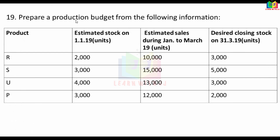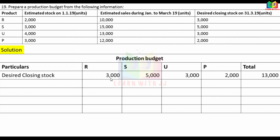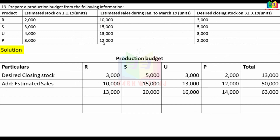Next problem: Prepare a production budget from the following information. Estimated opening stock is given. Estimated sales during March 2019 and desired closing stock are given. Production budget formula: closing stock 3,000 + 5,000 + 3,000 + 2,000 added. Sales: 10,000 + 15,000 + 13,000 + 12,000. Total 13,000 + 20,000 + 16,000 + 14,000 = 63,000. Minus opening stock: 2,000 + 3,000 + 4,000 + 3,000. This gives required production.